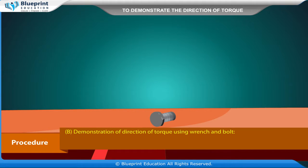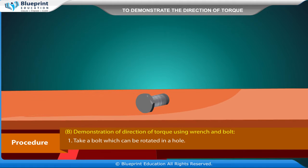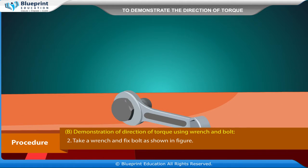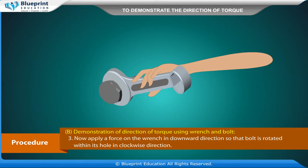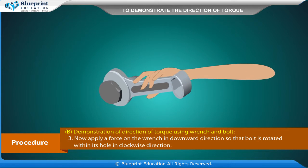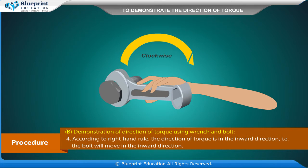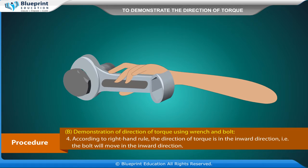Demonstration of direction of torque using a wrench and bolt: Take a bolt which can be rotated in a hole. Take a wrench and fix the bolt as shown in the figure. Now apply a force on the wrench in the downward direction so that the bolt is rotated within its hole in the clockwise direction. According to the right-hand rule, the direction of torque is in the inward direction — that is, the bolt will move in the inward direction.